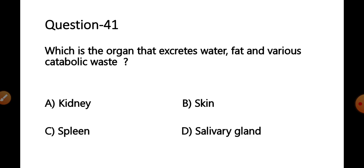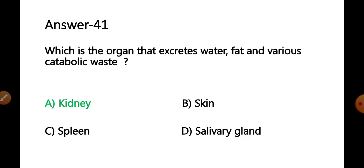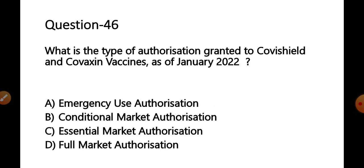Question 41: Which organ excretes water, fat, and various catabolic waste? Options: A) kidney, B) skin, C) spleen, D) salivary gland. The kidneys serve several essential regulatory roles including regulation of electrolytes, maintenance of acid-base balance, and regulation of blood pressure. They act as a natural filter of blood, removing waste like urea, creatinine, and undigested fat. The correct answer is option A — kidney.